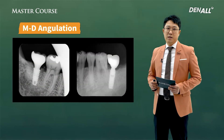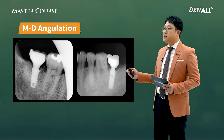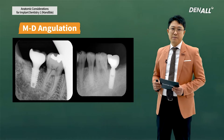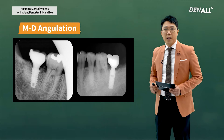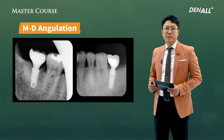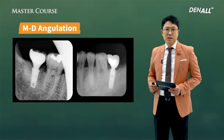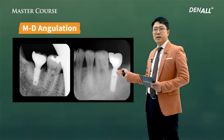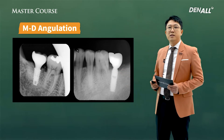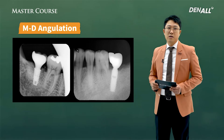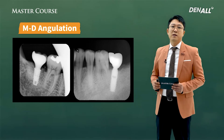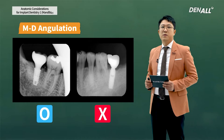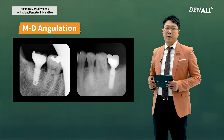Therefore, when you place an implant, the inclination should be similar to the natural teeth of the mandible, so it should be mesially inclined - in line with the direction of masticatory muscle contraction. From the mechanical perspective, a mandible implant should be placed with mesial inclination. A distally inclined implant may damage the mesial tooth root, and from the mechanical perspective, there is a risk of abutment screw fracture. Therefore, when an implant is placed on the mandible, it should be mesially inclined.